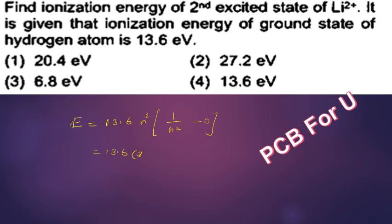n is equal to 3, so 3 square, 1 by 3 square, 1 by 0. So 13.6 into 3 square over 9 into 1 by 9. 1 by 9 or 1 by 9 minus 0 and 1 by 9, so 9-9 cancel.